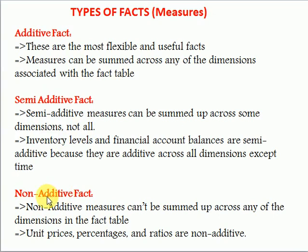Non-additive facts means you have a fact table with some measures, but those measures are not related to any of the dimension tables. Those facts are not related to any dimension. We call those non-additive facts — like unit prices, percentages, ratios, or gross profit. Those are related to non-additive facts.